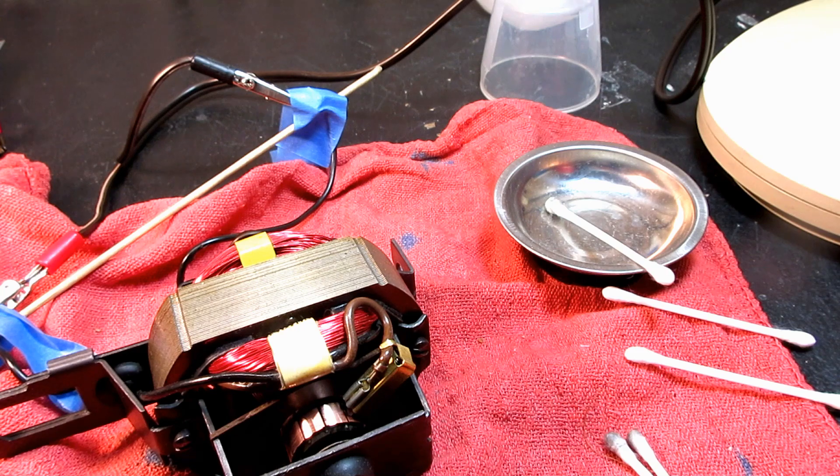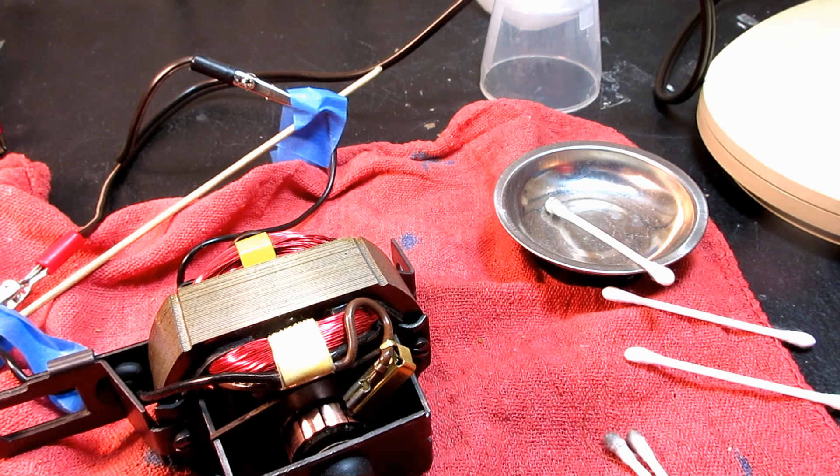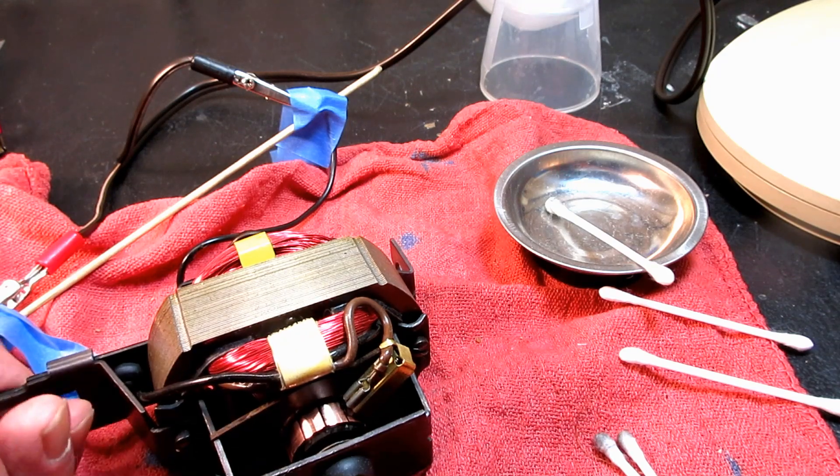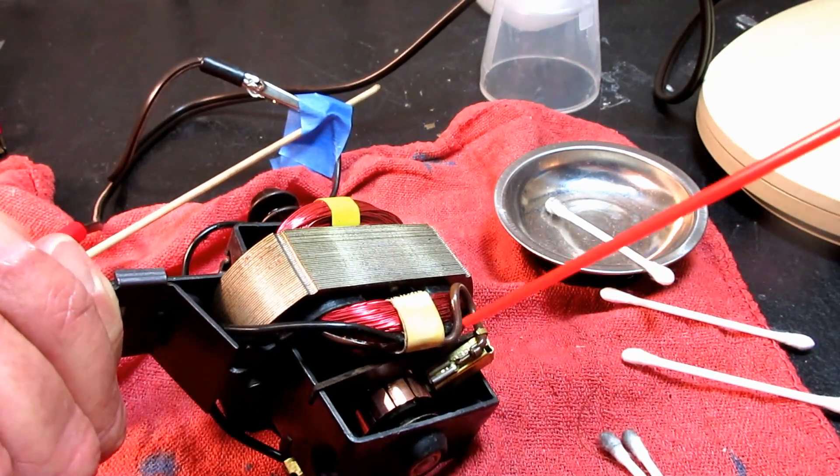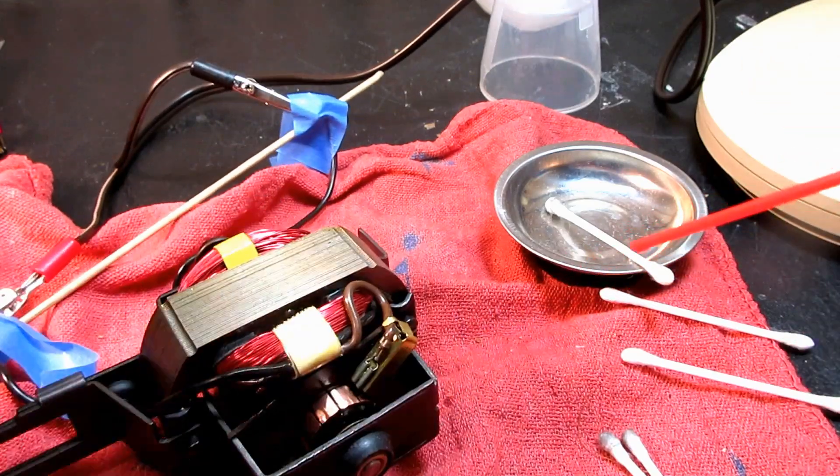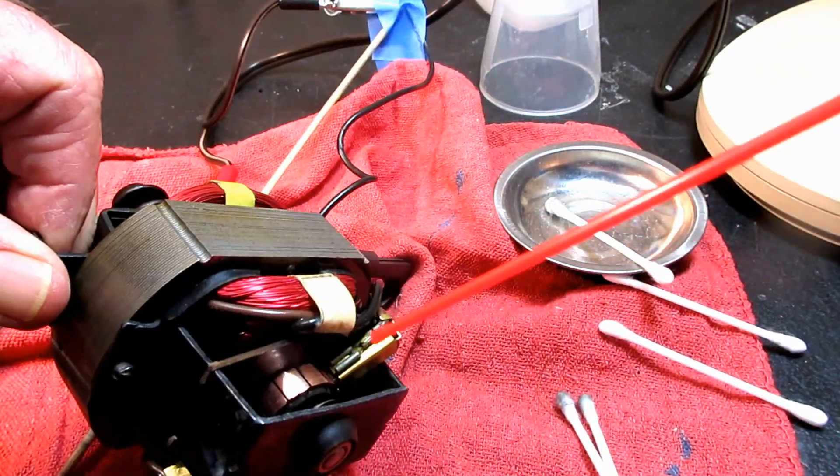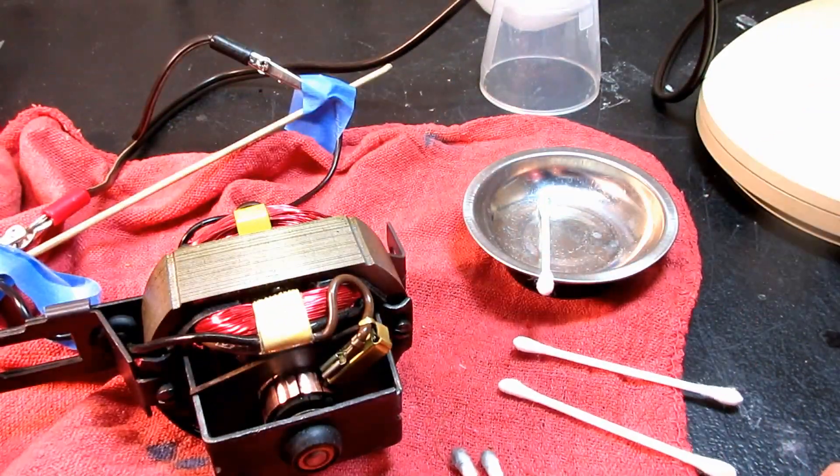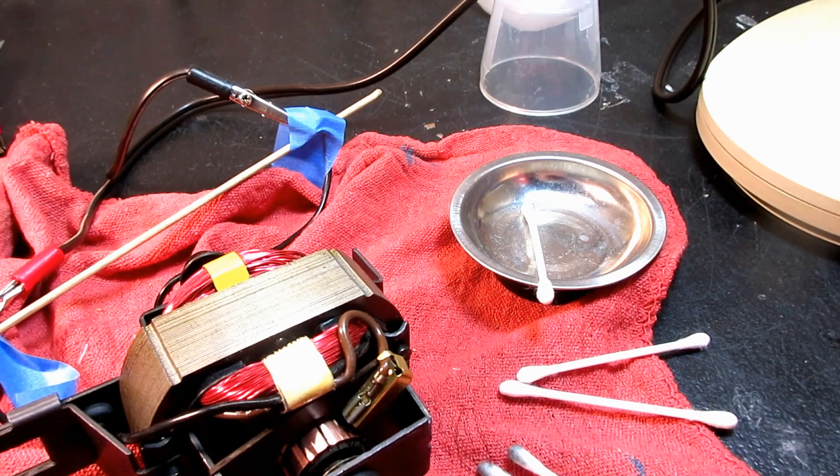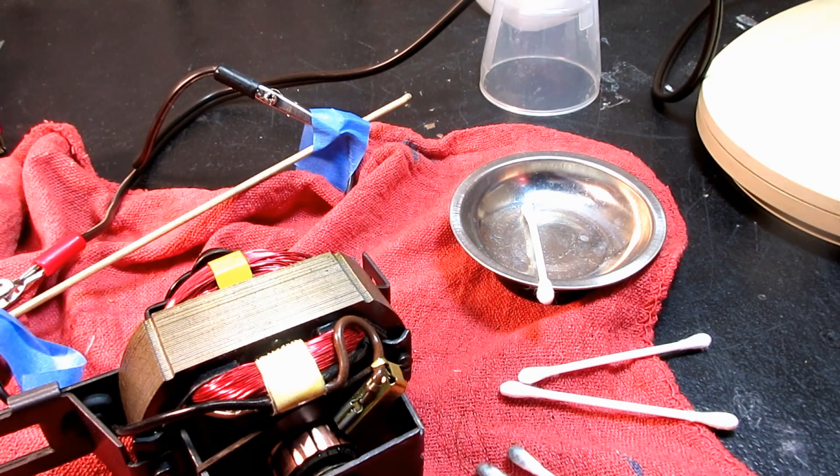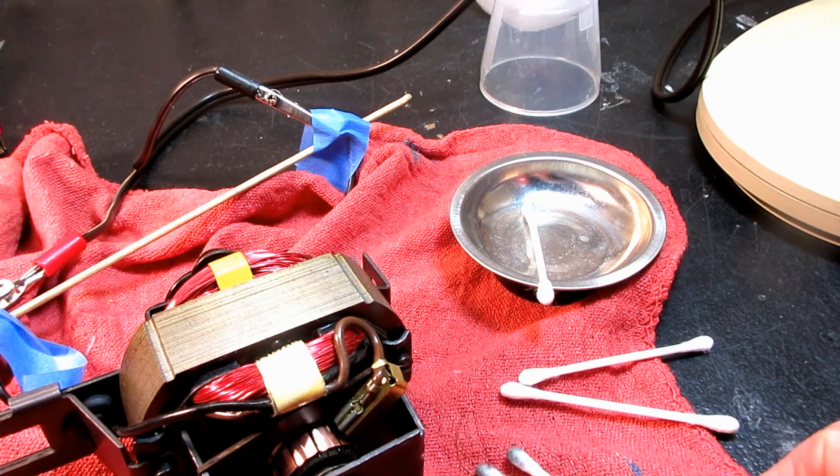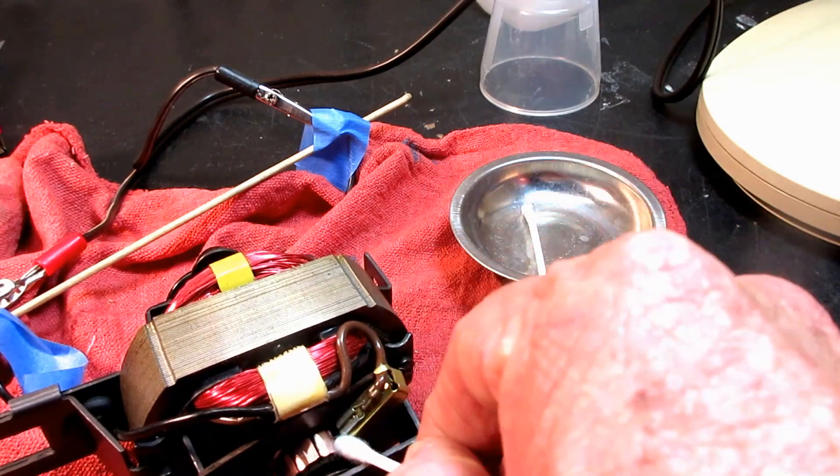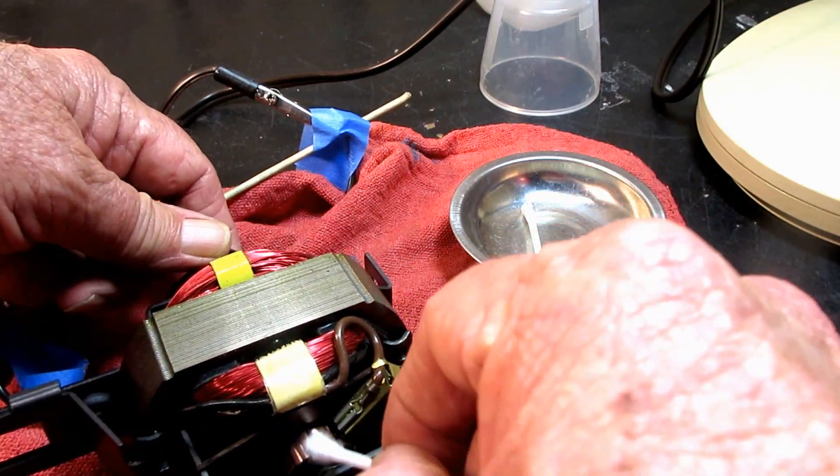Of course you don't want to overdo this and get carried away because you are losing some copper I'm sure whenever you do this. But from what I've seen from doing these two motors I lost a lot less copper than using the 600 grit sandpaper, which didn't lose that much copper at all. But the motor has a finite amount of copper here on the commutator and you don't want the copper to get lower than the little dividers in there.